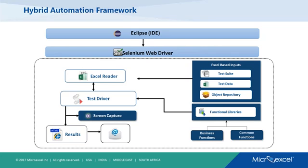You can have your function libraries in a Java file containing your business functions and common functions. All these things — test suite, test data, object repository Excel, and the function library Java class — are then driven by a test driver. The test driver picks all inputs from the test suite, test data, and object repository, performs all the actions, and a screen capture utility can be triggered as well. Once all test suites have run, an HTML report is generated. This is the whole setup of how the framework works in the real world.